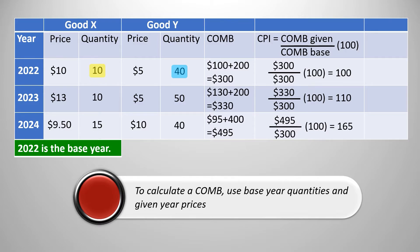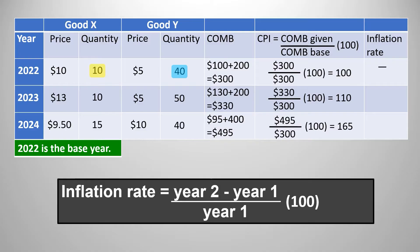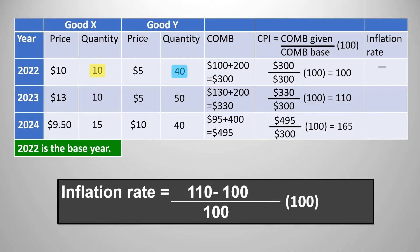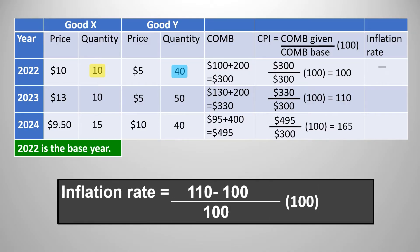The last thing we need to do is find the inflation rate. The inflation rate is the percent change in the price level from one year to the next, calculated the same way as any other percent change. To find the inflation rate, take the CPI in the second year, subtract the CPI of the first year, divide by the first year's CPI, then multiply by 100. For 2023: 110 minus 100 equals 10, divided by 100, times 100 equals 10%. For 2024, we measure from 2023: 165 minus 110 equals 55, divided by 110, equals 0.5, times 100 equals 50%. And we have our inflation rate.